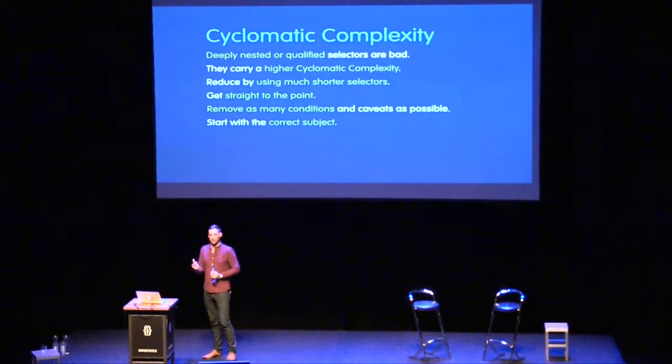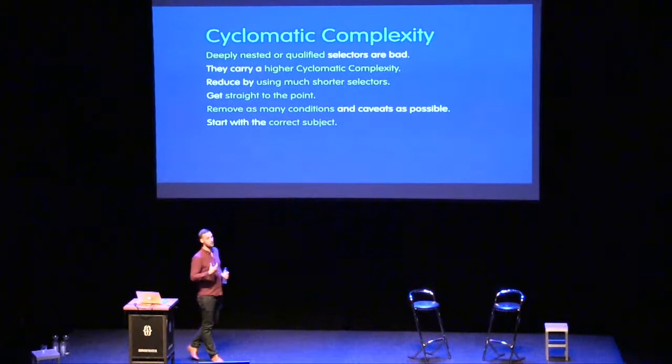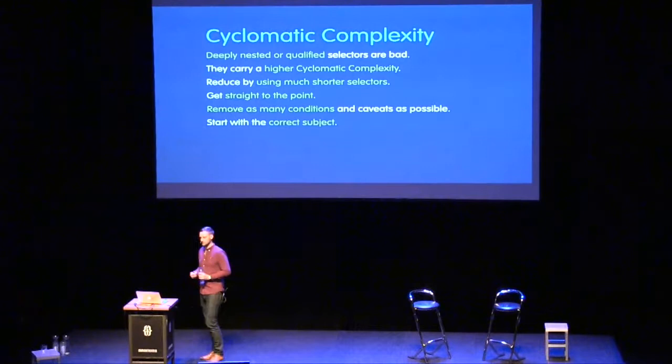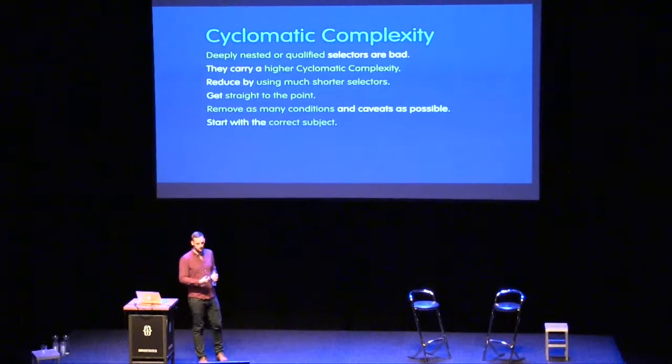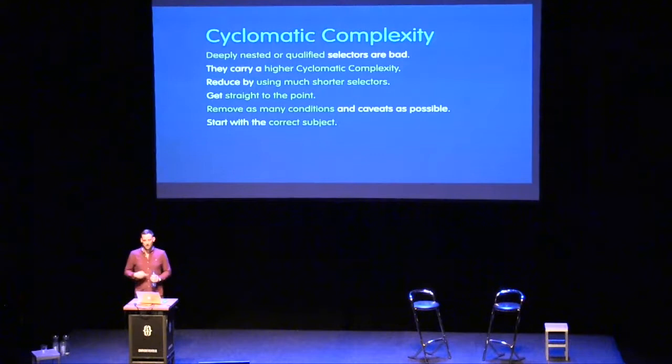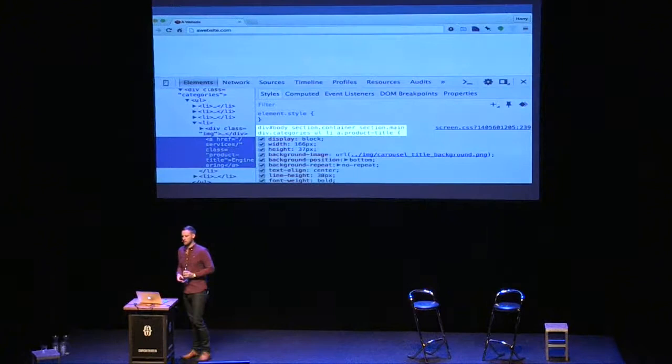Keep your selectors as short as possible — this reduces cyclomatic complexity. Try getting straight to the point; target bits of the DOM very explicitly from the beginning. A really good example of where this goes wrong: a friend of mine built a website about six years ago — he knows I use this example — he'd just learned Sass and he just opened up the body selector and nested everything right the way down.